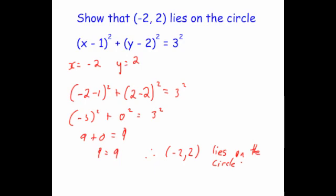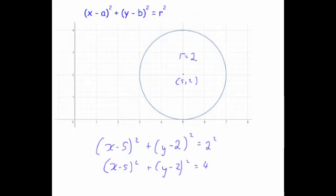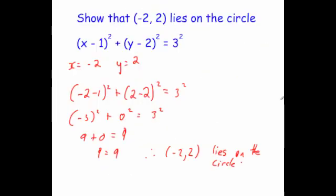So in this video, we've looked at the equation of a circle, which is x minus a, all squared, plus y minus b, all squared, equals r squared, where a and b are the x-coordinate and y-coordinate for the center of the circle, and r is equal to the radius. We've looked at how to find the equation for some given circles, and how to show that a point lies on a circle by substituting in. This video is an introduction to the equation of a circle — if you want to see more, have a look at the A-level videos.